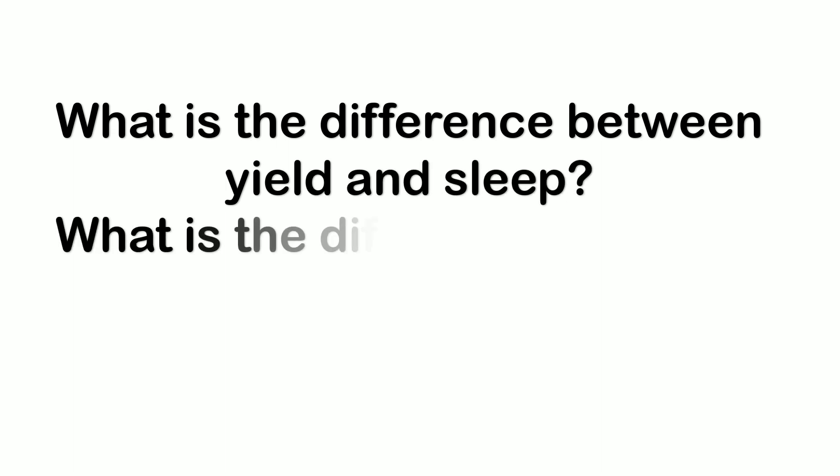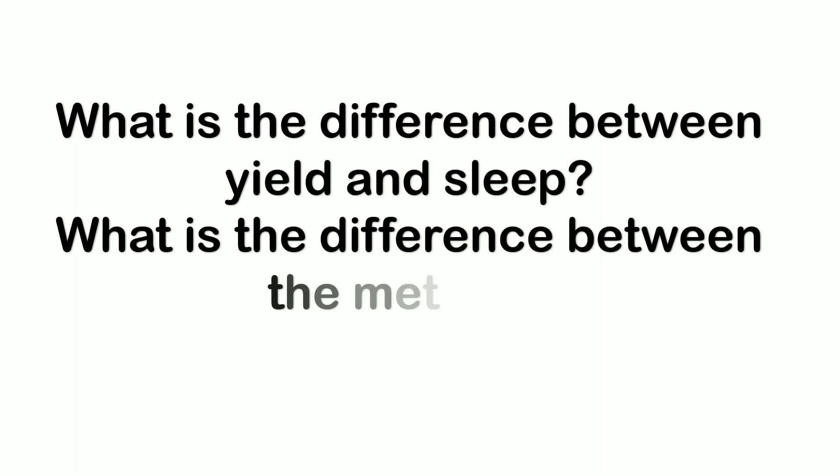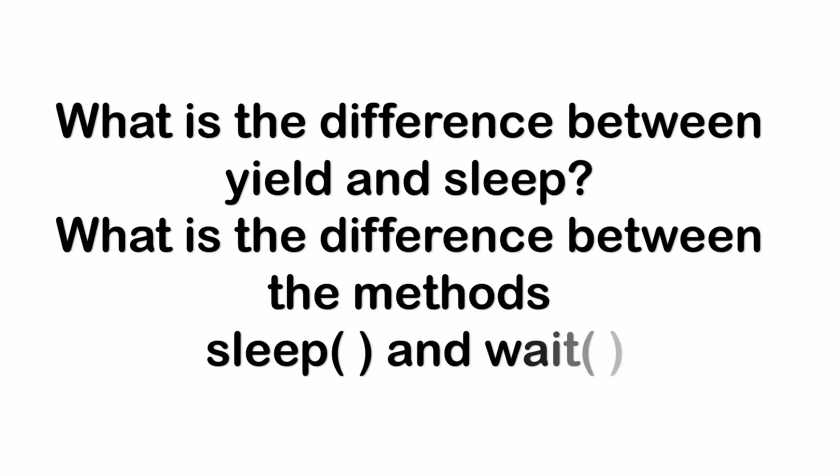The next question was about the difference between yield and sleep, and the difference between sleep and wait. For the sleep() method, you specify milliseconds and nanoseconds as arguments. For the yield() method, it temporarily pauses the current executing thread to give a chance to remaining waiting threads of the same priority. Note: if there are no waiting threads or all waiting threads have lower priority, the current thread continues its execution.